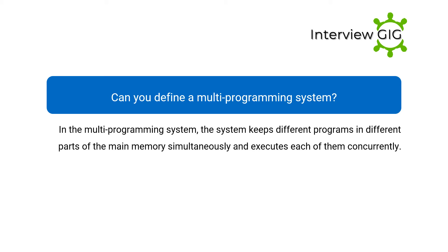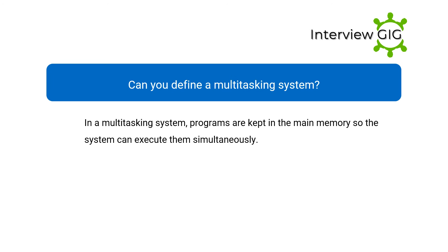Can you define a multi-programming system? In a multi-programming system, the system keeps different programs in different parts of the main memory simultaneously and executes each of them concurrently.